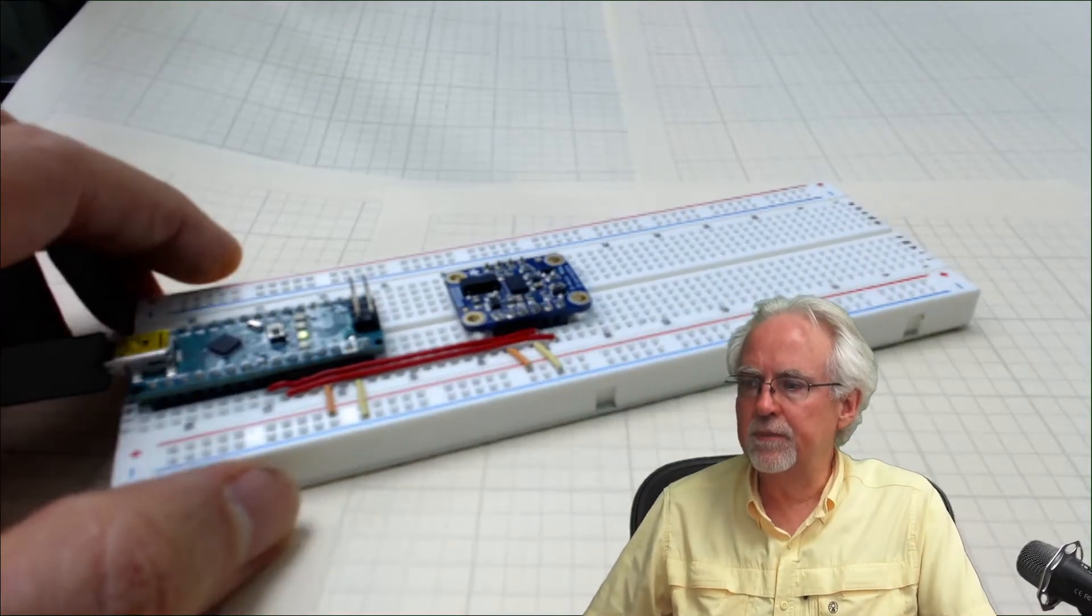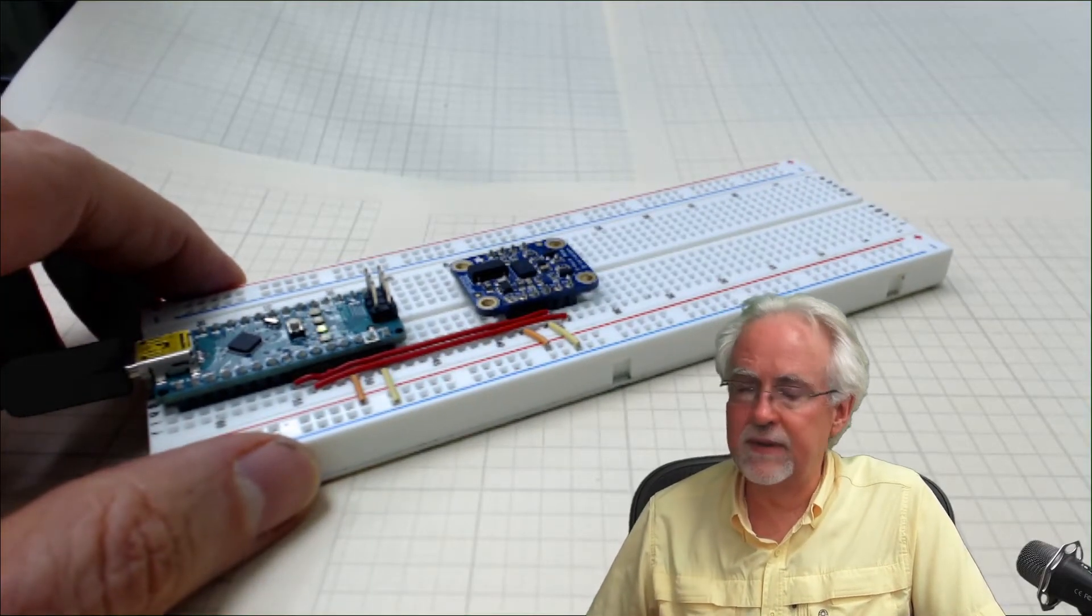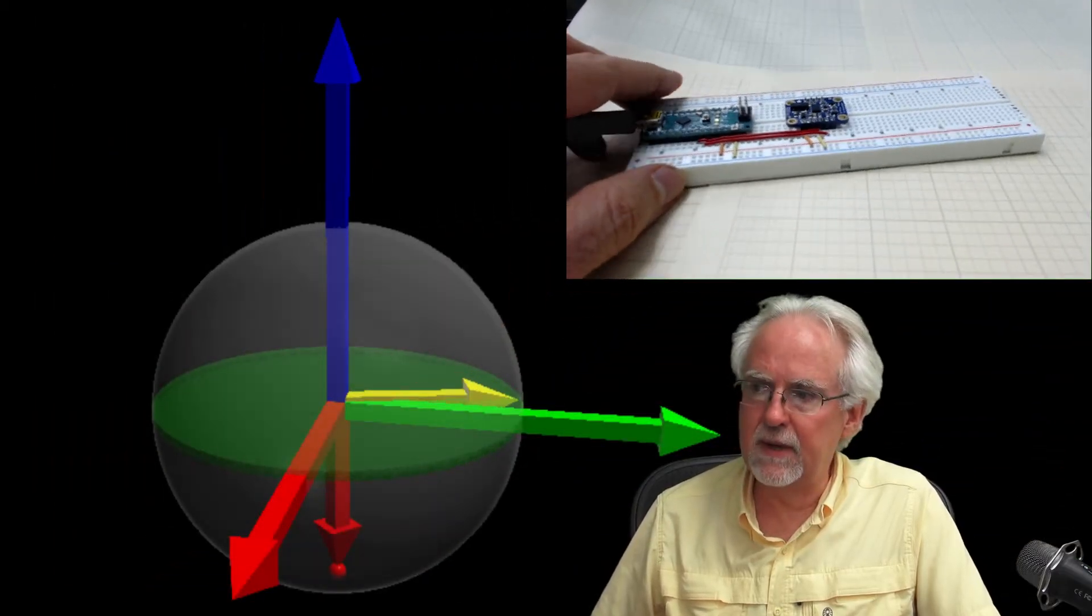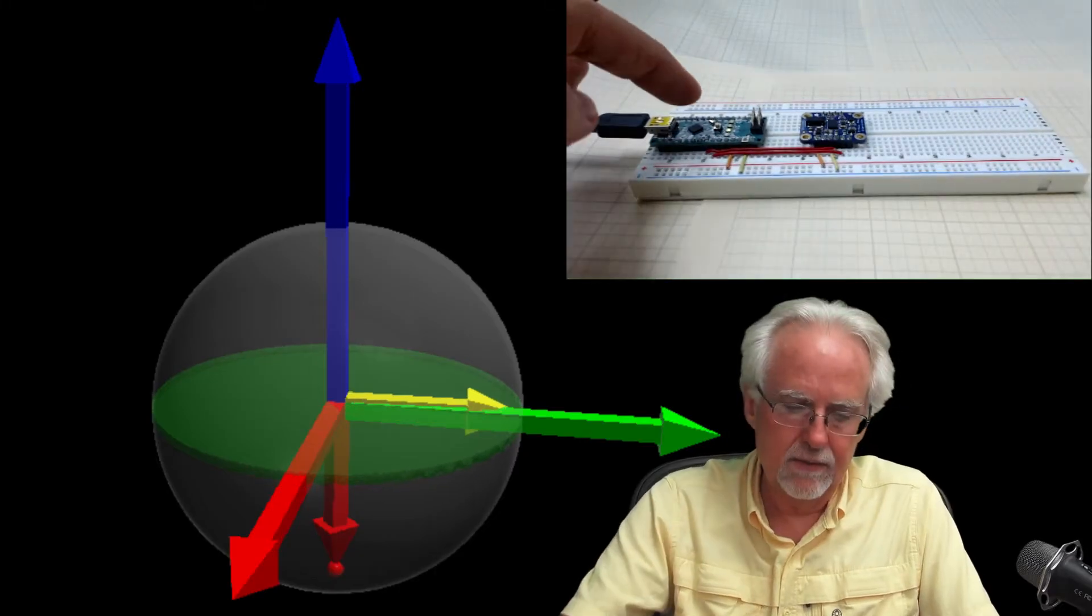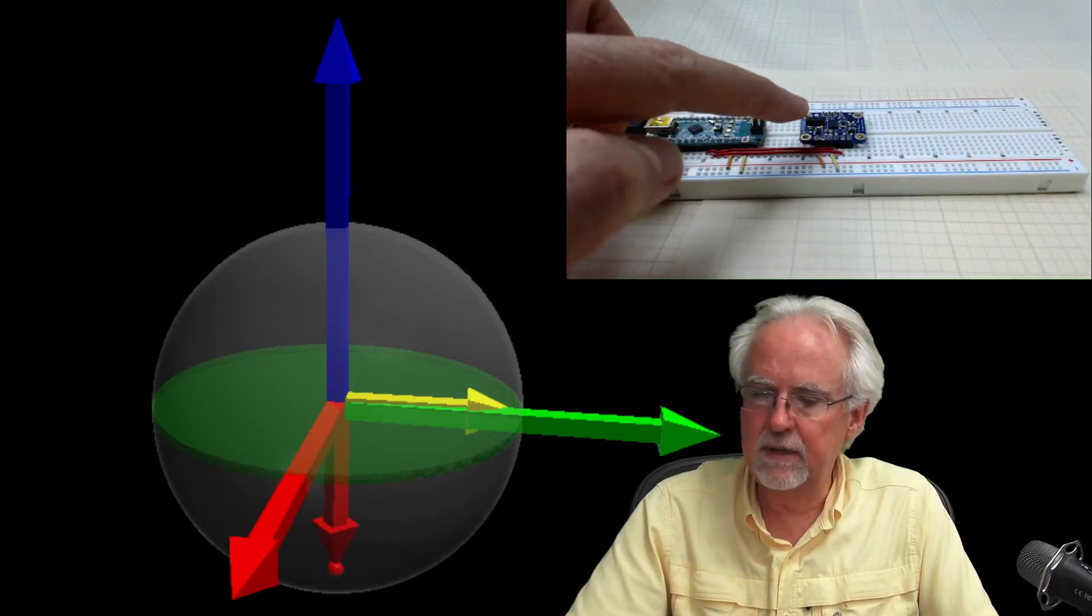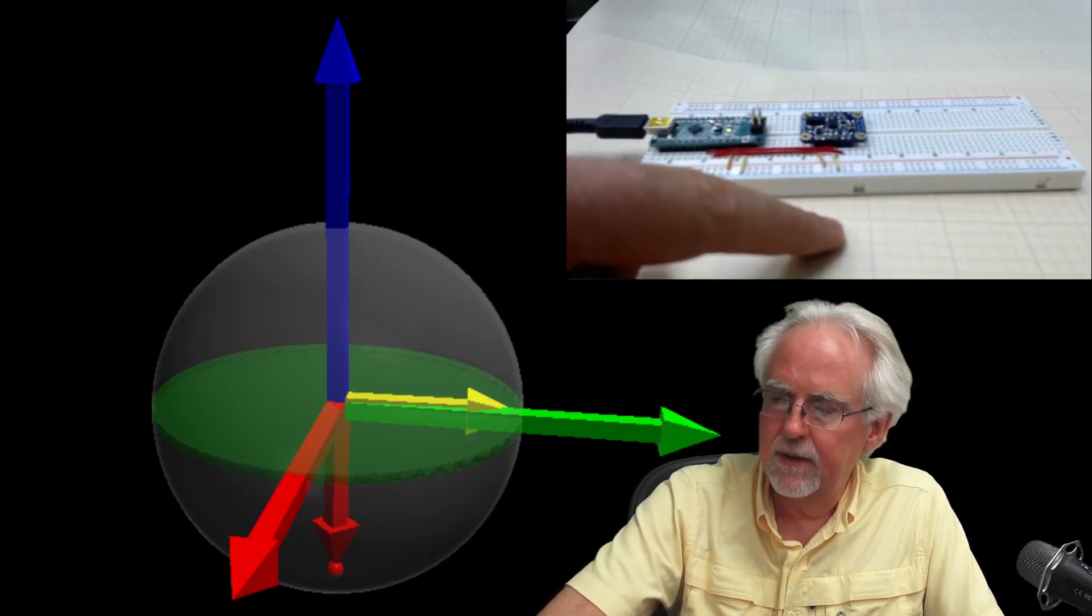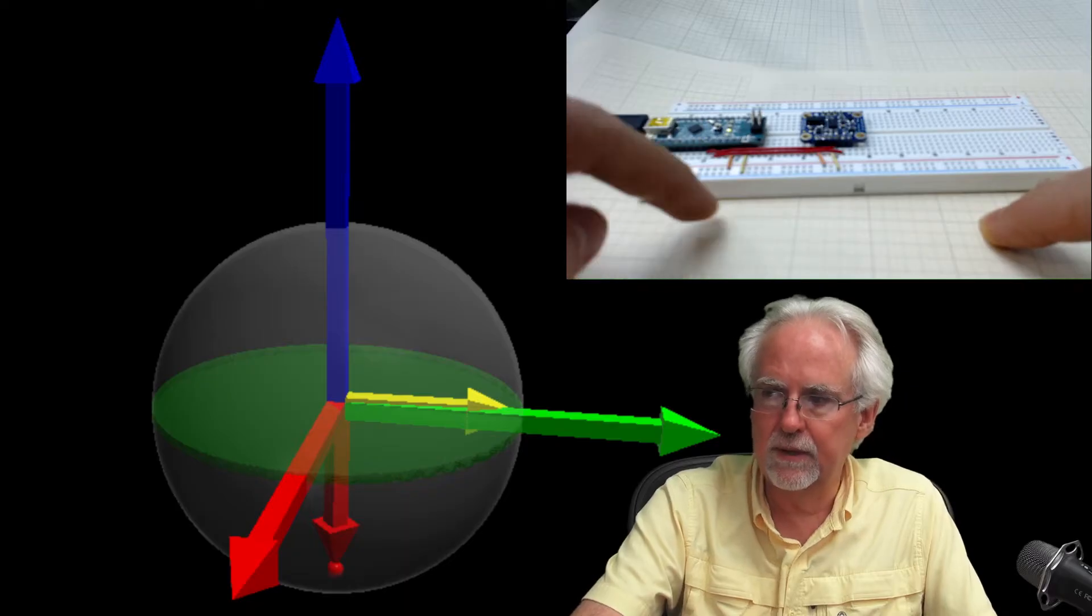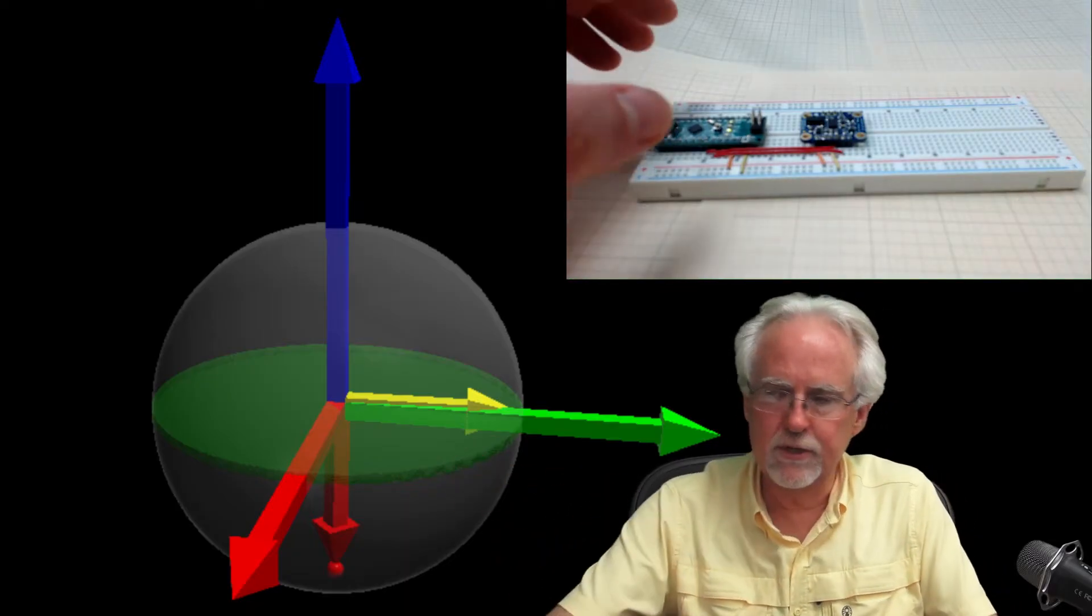Let me show you in the end what we are actually going to end up with here if you follow me through these lessons. OK, what do we have here? We have the Arduino hooked up to the BNO 055. And this, this is the real world. OK, this is the real world.